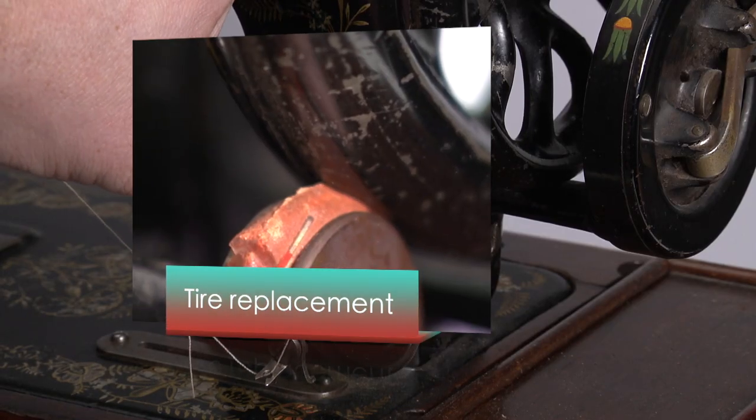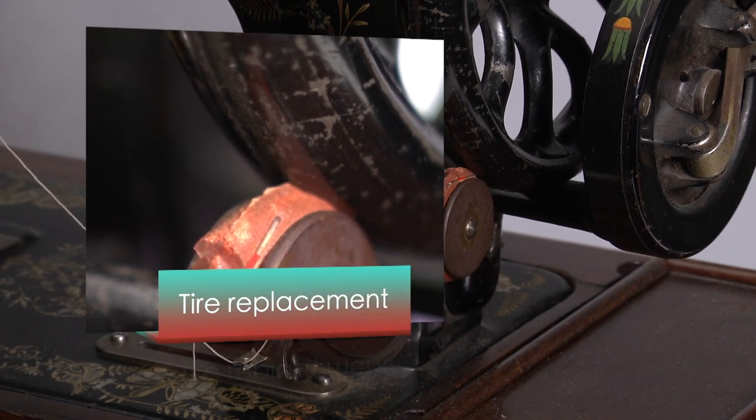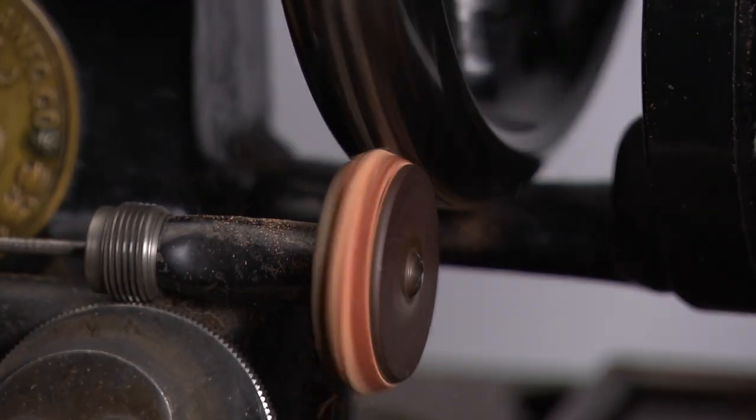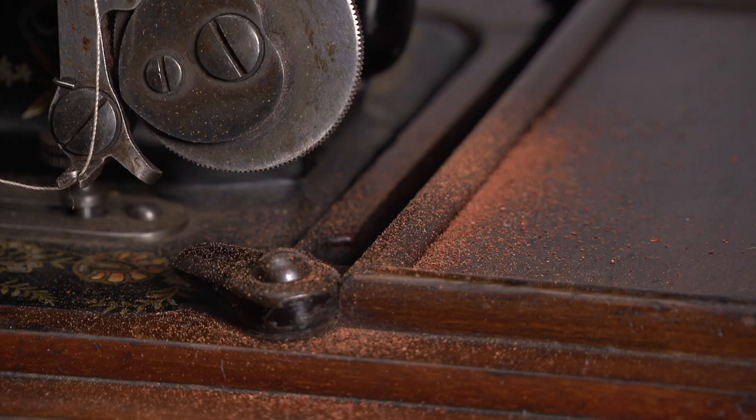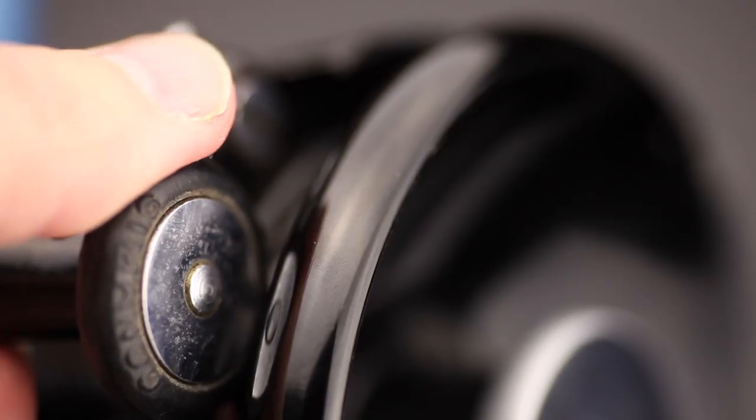The earlier models have a leather winding wheel or tire. The disadvantage? It will disintegrate when it gets older. Most vintage Singer sewing machines have a rubber wheel, but that gets old too. But you can replace it very easily.